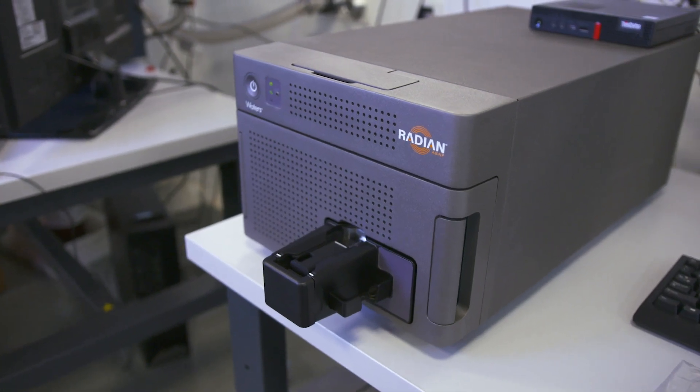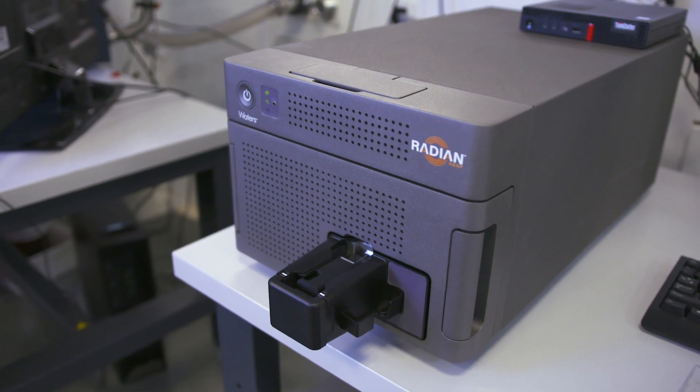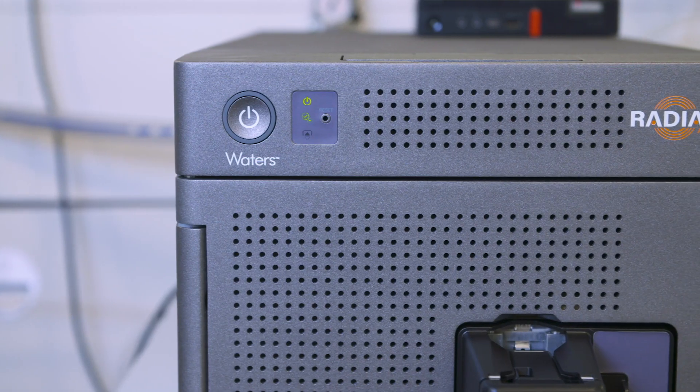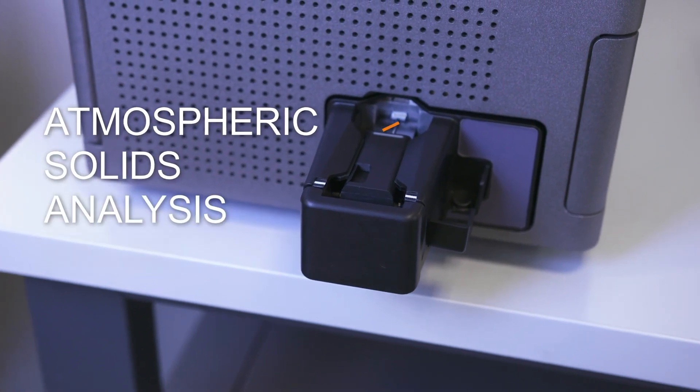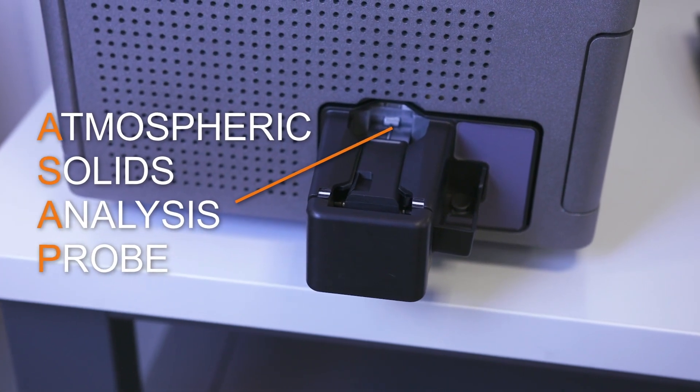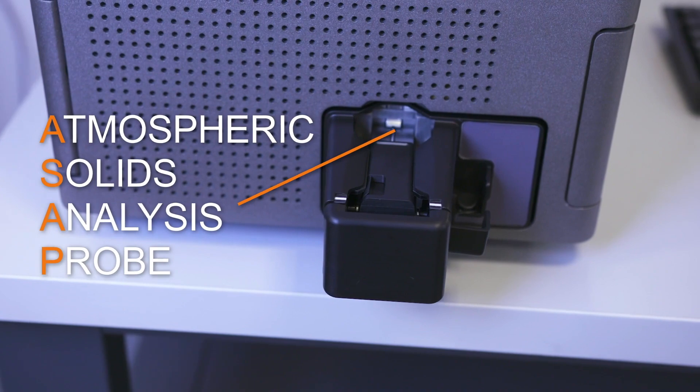The RADIAN ASAP instrument is a dedicated mass detection system with direct analysis utilizing the Atmospheric Solids Analysis Probe, known as ASAP, which can be used to address these challenges.